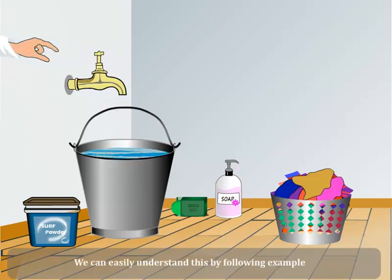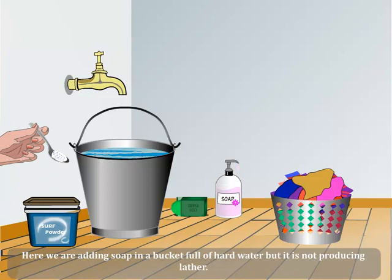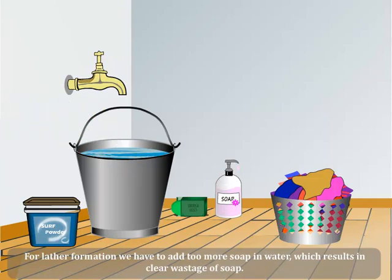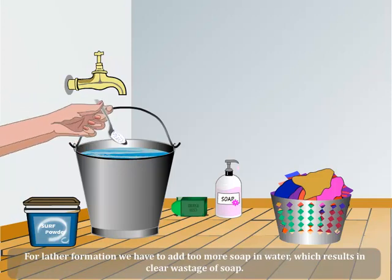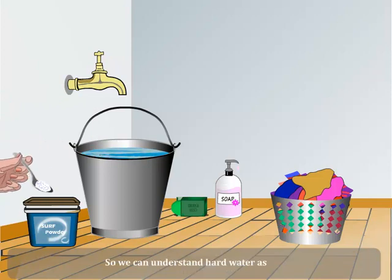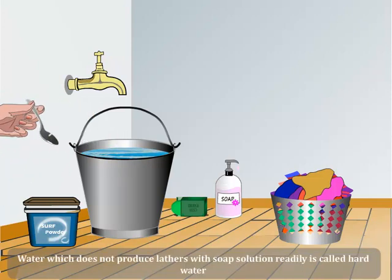We can easily understand this by the following example. We are adding soap in a bucket full of hard water, but it is not producing lather. For lather formation, we have to add too much soap in water, which results in clear wastage of soap. So we can understand hard water as: water which does not produce lather with soap solution readily is called hard water.